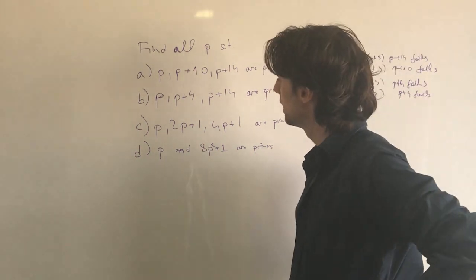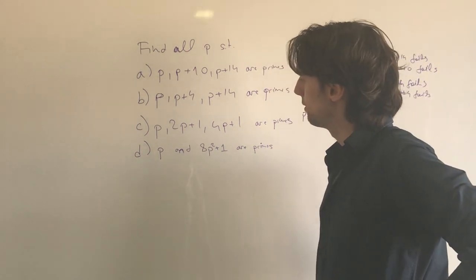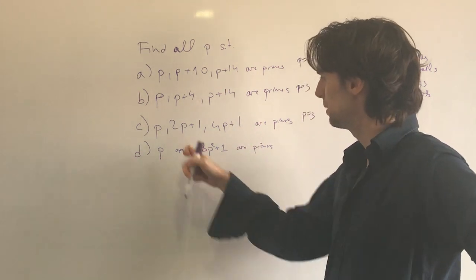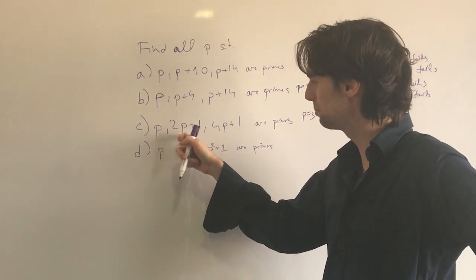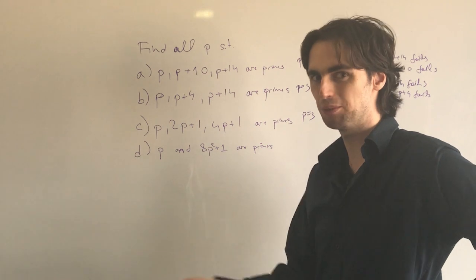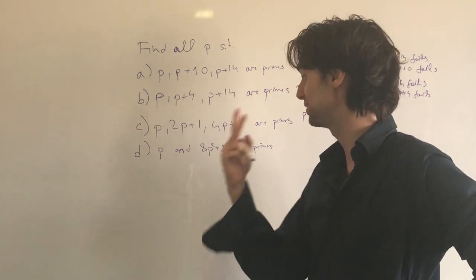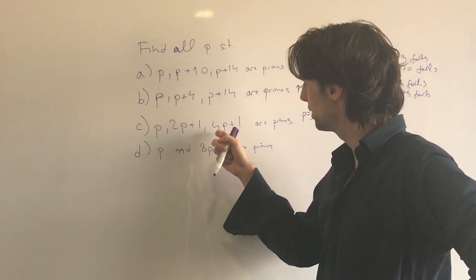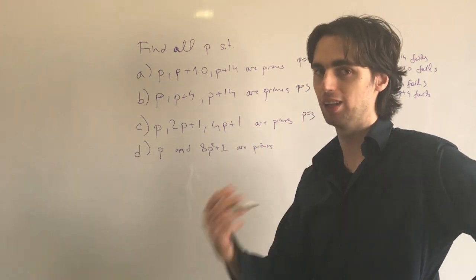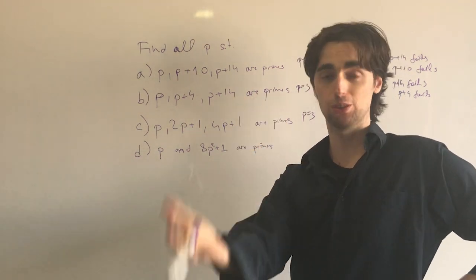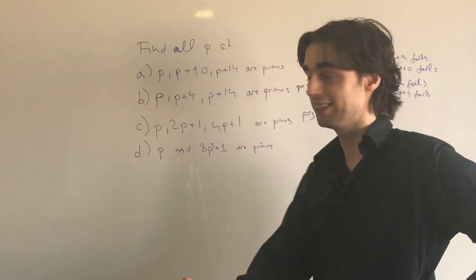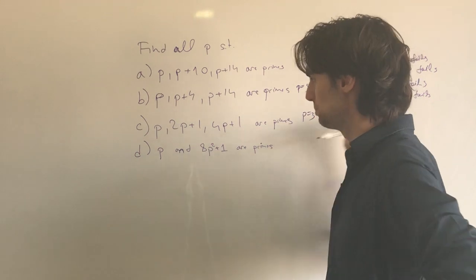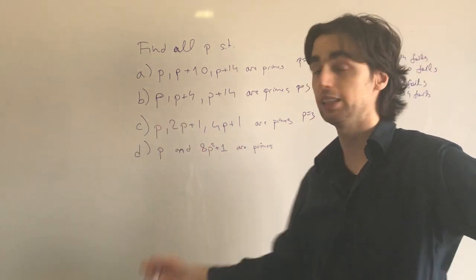Using the same modular technique: if P is congruent to 1 modulo 3, then 2P plus 1 is congruent to 2 times 1 plus 1 = 3, which is 0 modulo 3 — so it fails. If P is congruent to 2 modulo 3, then 4P plus 1 is congruent to 4 times 2 plus 1 = 9, which is 0 modulo 3 — so it fails. Therefore P equals 3 is the only solution.